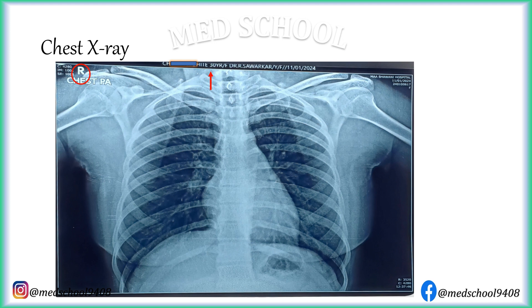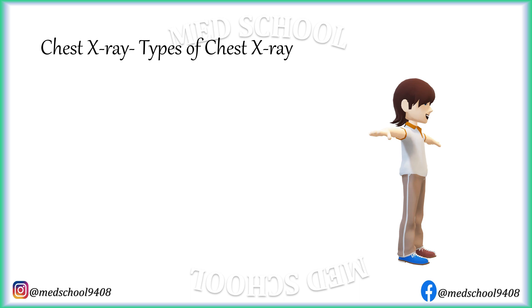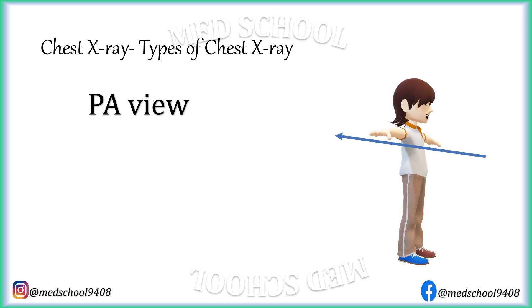Chest X-rays are always done in PA view unless the patient is not able to stand. The projection is indicated on most films. The projection depends on the direction of X-ray passing through the body. When X-ray passes from the posterior surface to the anterior surface, it is called PA view. When X-ray passes from the anterior surface to the posterior surface, it is called AP view.